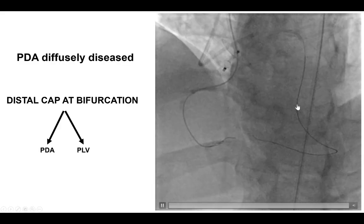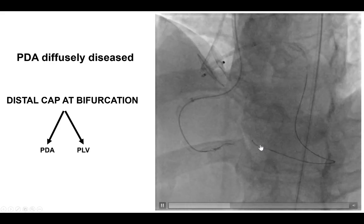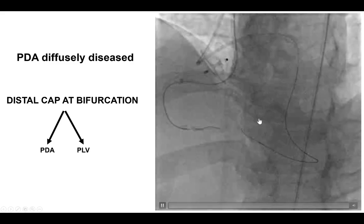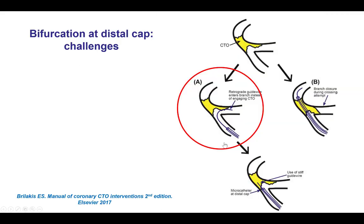However, once the Caravelle went all the way to the PDA, the retrograde guide wire kept on entering into the right posterolateral branch instead of going towards the distal right coronary artery. This is one of the common challenges with CTOs that have a bifurcation on the distal cap — the retrograde guide wire keeps on entering the side branch instead of engaging the CTO. The other potential challenge is that we get through the CTO but close the side branch during the process.